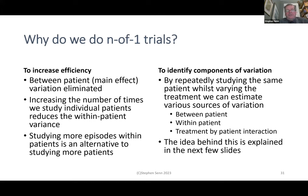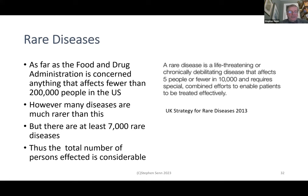Why do we do N-of-1 trials? To increase efficiency: between-patient main effect variation is eliminated. Increasing the number of times we study individual patients reduces within-patient variance as well. Studying more episodes within patients is an alternative to studying more patients — since I was working on the IDEAL rare diseases project, headed by Dieter Hilgers at the University of Aachen, this was a particularly attractive path. If you have a limited number of patients suffering from a chronic disease, perhaps the way to find out what is best for this community is to study each patient several times.